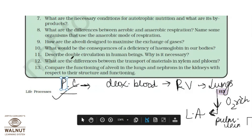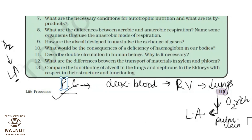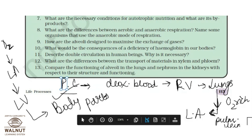Systemic circulation: the oxygenated blood brought to the left atrium goes to the left ventricle, and from there it is distributed to all body parts via the aorta. So systemic circulation is the distribution of O2-rich blood from left atrium to left ventricle and then to all body parts.